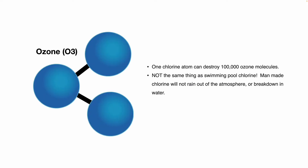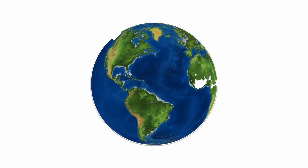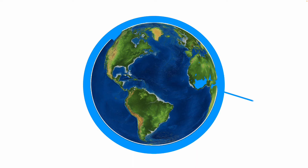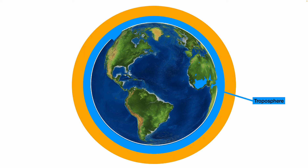Here's the ozone molecule, O3. One chlorine atom can destroy 100,000 ozone molecules — there'll usually be a test question about that. To clarify, man-made chlorine is not the same as swimming pool chlorine; man-made chlorine will not rain out of the atmosphere or break down in water. The stratosphere exists between the 7 and 30-mile range above the troposphere, and that is what you need to know for the EPA 608 exam.